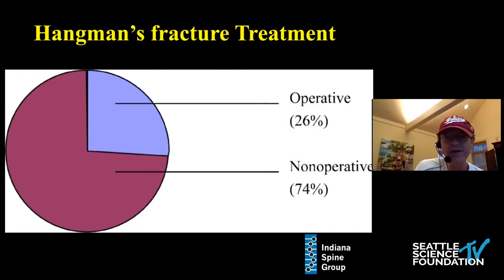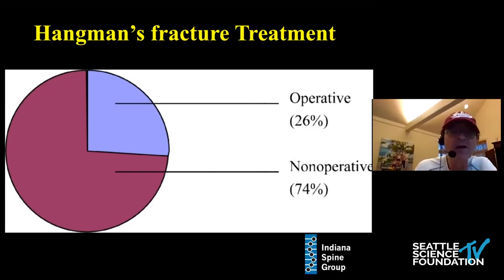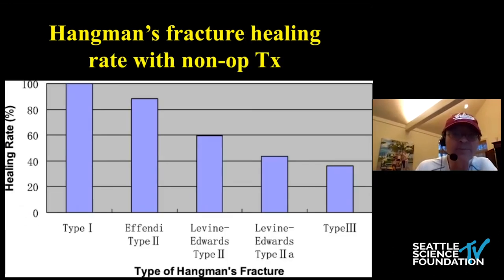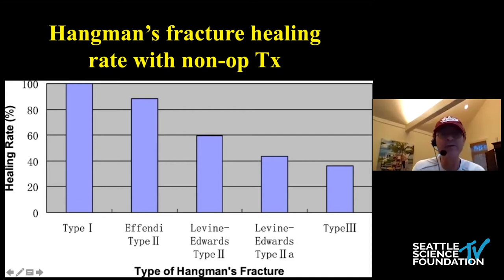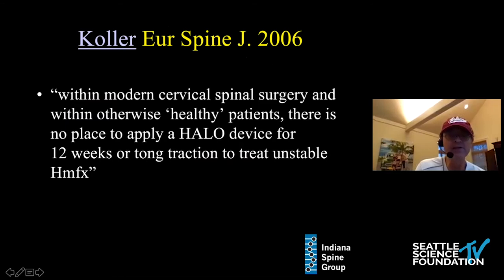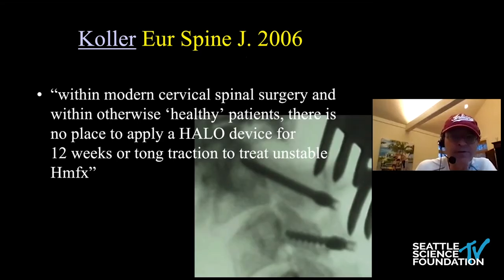In the big picture, you need to understand that the vast majority of Hangman's fractures are treated non-operatively, but that's because 70% are non-displaced type 1. Type 1 fractures heal universally with non-operative treatment, but type 2 and type 3 fractures have extreme difficulty healing non-operatively. Because of that, many authors have recommended surgical stabilization for these fractures.